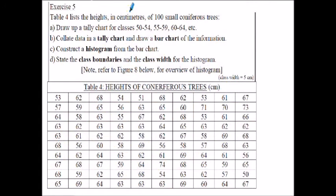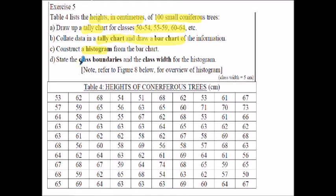This exercise I leave you to try - it has the height in centimeters of a hundred small conifers. You've got to draw up a tally chart using the suggested classes. This will form discrete data, so you're going to tally the information and then draw a bar chart. Then you're going to construct a histogram from the bar chart information and state the class boundaries and class width for the histogram - a very similar process to the previous examples.